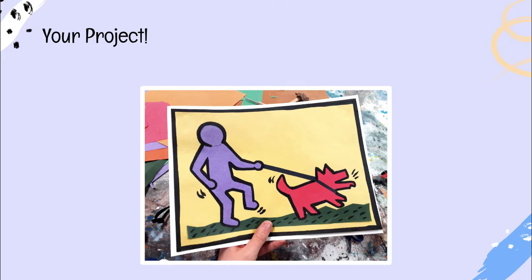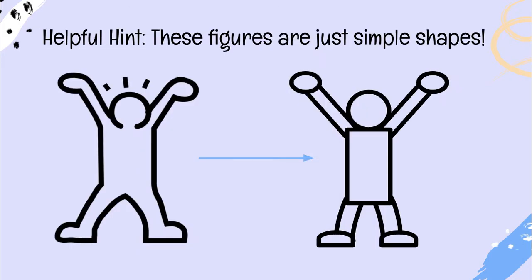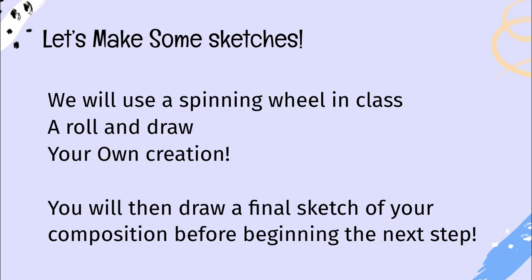Here's the example — these figures are just simple shapes. Keith Haring's figures, which will be the basis of your composition, are basically simple shapes. Basic shapes like circles and rectangles can help you draw your simple figures. Let's make some sketches — you will be using a spinning wheel in class.